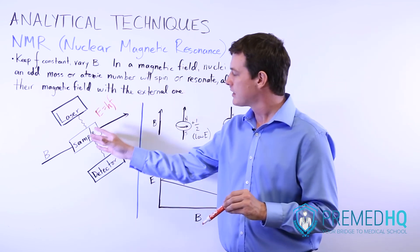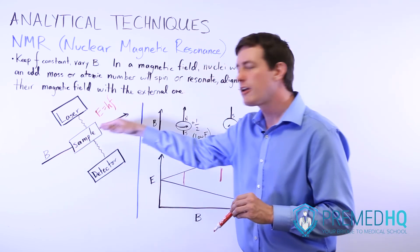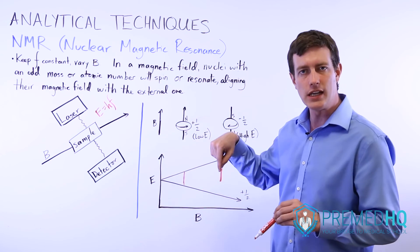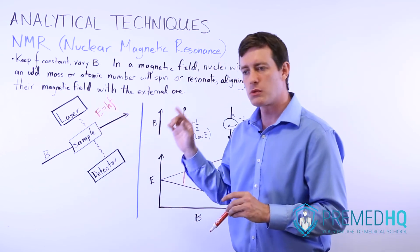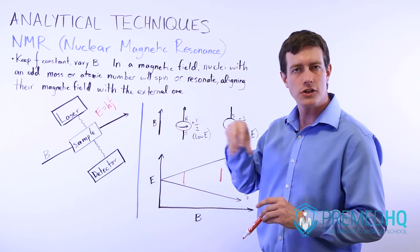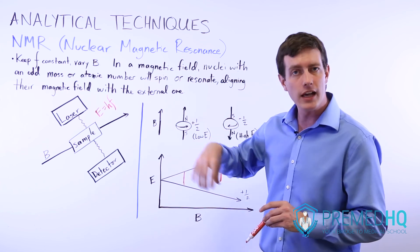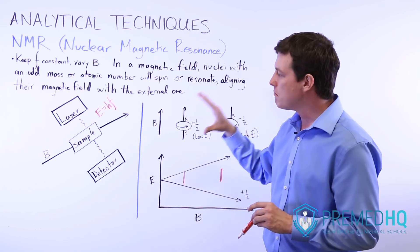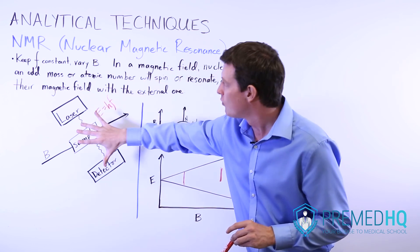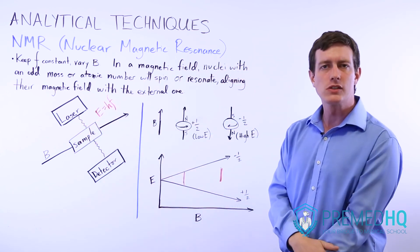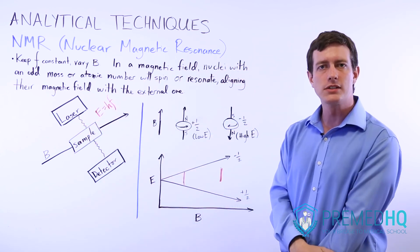But understanding this setup and realizing that the magnetic field is what creates the spin state, and that the laser is what allows it to flip from a low energy spin state to a high energy spin state—that's the major theoretical basis of why nuclear magnetic resonance works as such a useful analytical technique.